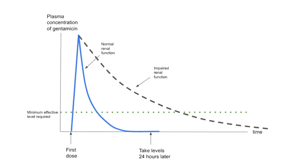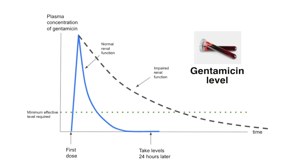Gentamicin is almost 100% cleared renally. In this illustration the blue peak shows clearance in a patient with normal kidneys, while the dotted line shows clearance in a patient with impaired renal function. At 24 hours after the first dose their gentamicin levels are still quite high, so you need to wait for levels to go down to zero and allow a drug-free interval before giving the next dose. The gentamicin curve is a very predictable first-order kinetics curve, and once you take a level and know the time, it's straightforward to work out when levels will reach zero.